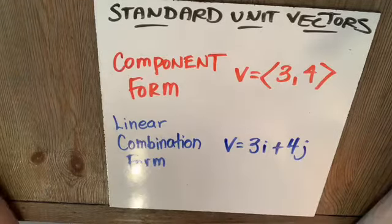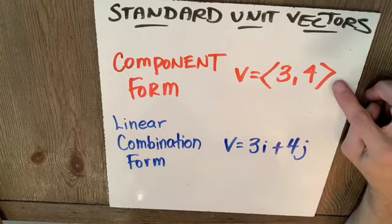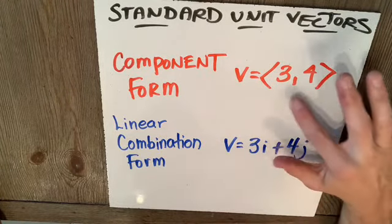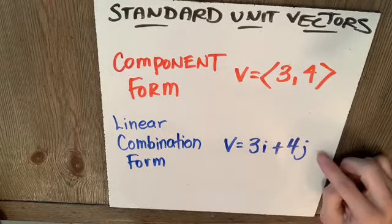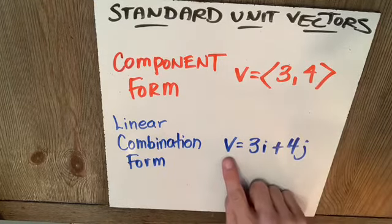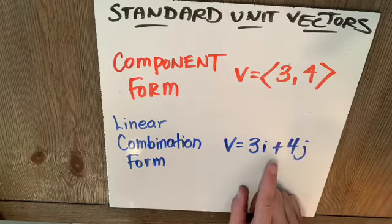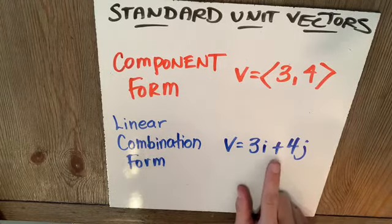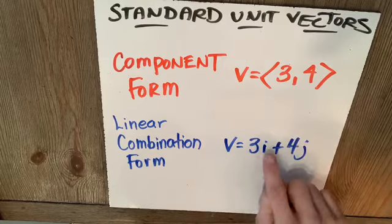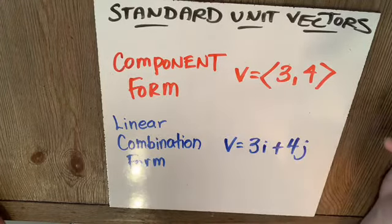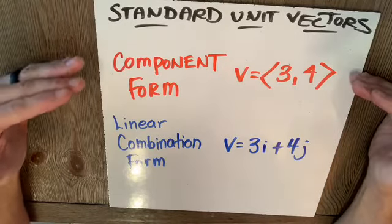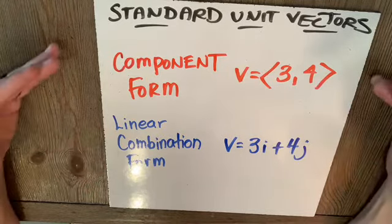It's just a notation thing here. Component form, vector v is <3,4>, that's v1, v2. In linear combination form, that same information will be conveyed as v equals 3i plus 4j. Notice the comma became a plus, and then we added the i's and j's and dropped the crimp brackets. They mean the same thing. Just get used to the fact that this can be written like this.